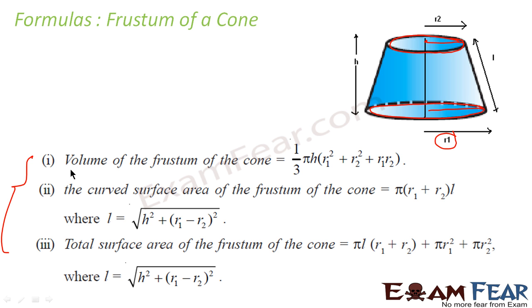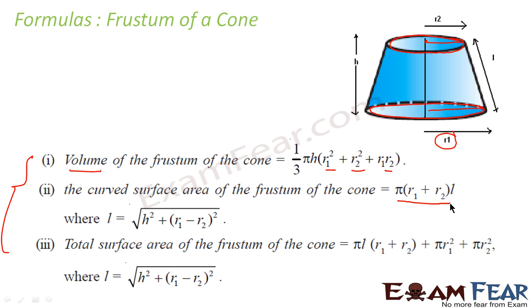If you want to find the volume of the frustum, the volume is (1/3) π h × (r1² + r2² + r1·r2). That is, volume = (1/3) π h (r1² + r2² + r1·r2).